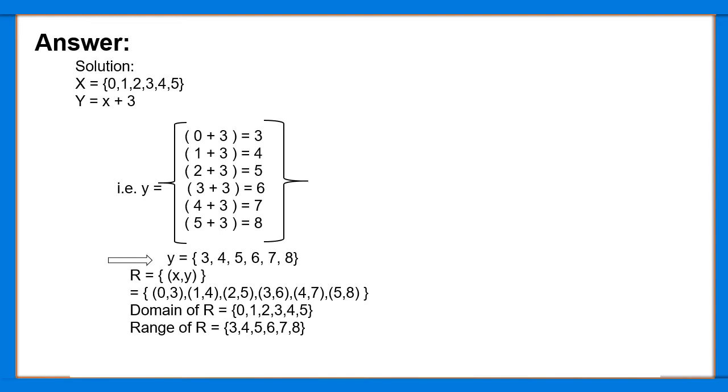That is, y = 0 + 3 = 3, 1 + 3 = 4, 2 + 3 = 5, 3 + 3 = 6, 4 + 3 = 7, 5 + 3 = 8. Therefore, y = {3, 4, 5, 6, 7, 8}.